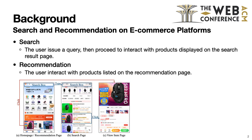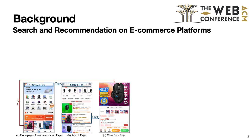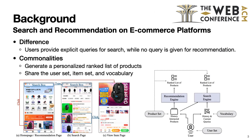On an e-commerce platform, users typically interact with products in two scenarios: search and recommendation. Users can interact with products on the recommendation page, or issue a query and then interact with products on the search result page. Traditionally, search and recommendation have been regarded as separate research scenarios.